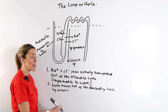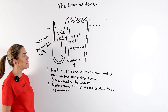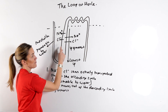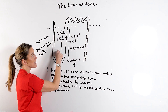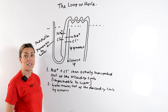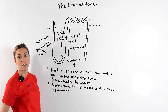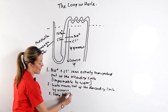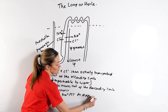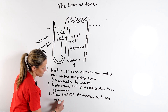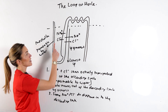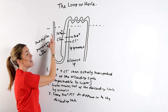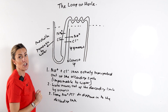The walls of the descending limb are permeable to water, so water can move out. Because we've been actively transporting sodium and chloride ions out of the ascending limb, we've lowered the water potential in the medulla. Water is going to move out of the descending limb from a higher water potential in the filtrate to a lower water potential in the medulla. Also worth noting: some sodium and chloride ions do diffuse into the descending limb, because there is a high concentration of those ions in the medulla, so they diffuse from a higher concentration in the medulla to a lower concentration in the descending limb.